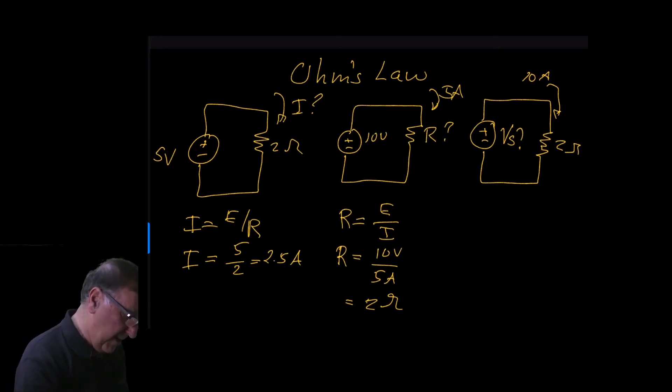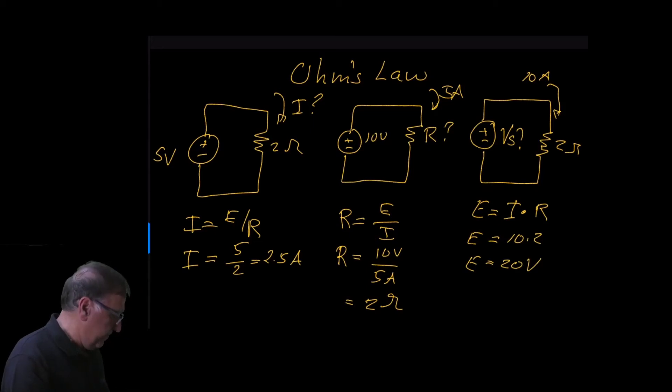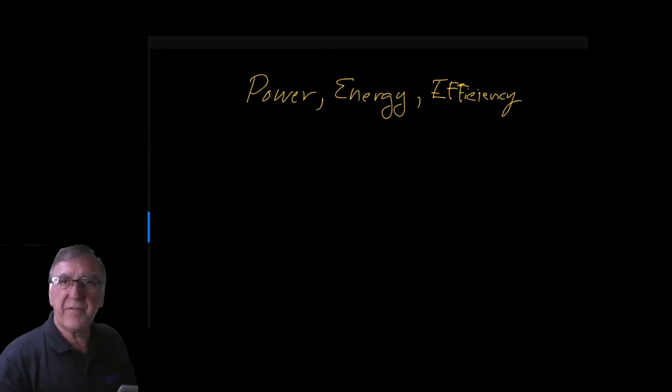In the last example, we want to compute the voltage source. So again, solving for E, covering up E, E equals I times R. E equals ten amps times two ohms. E equals twenty volts. That completes our review of chapter 2.